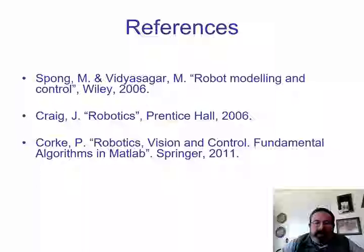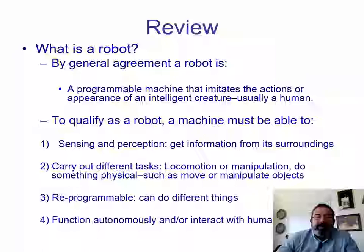References for this part of the course are going to be three books mainly: the one from Spong and Vidyasagar, "Robot Modeling and Control"; the one from Craig, "Robotics"; and another very important book about robotics and automation, "Mad Love" mainly, which is a book from Peter Cork.